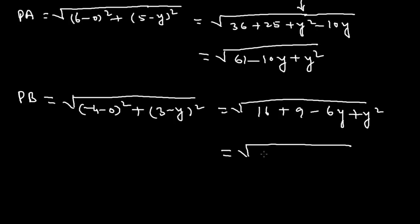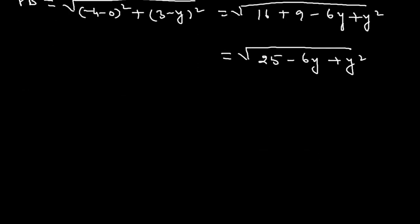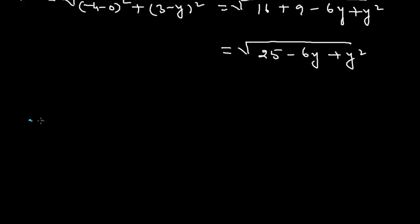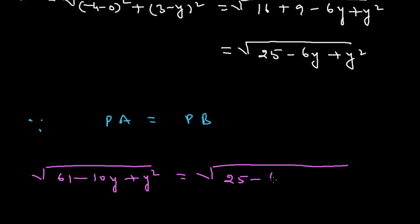We are given that PA is equal to PB. This means √(61 - 10y + y²) is equal to √(25 - 6y + y²).